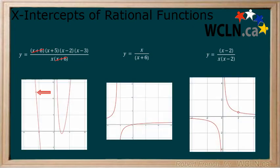Once we ignore the point of discontinuity at x equals negative 6, the first equation has three x-intercepts at x equals negative 5, 2 and 3.